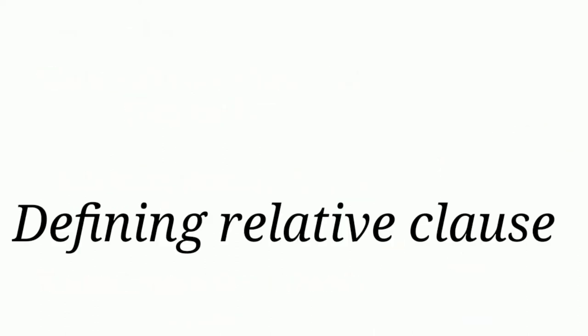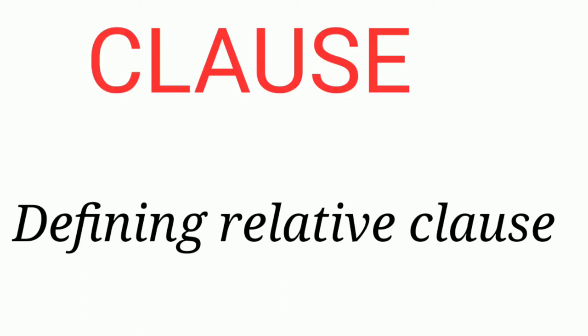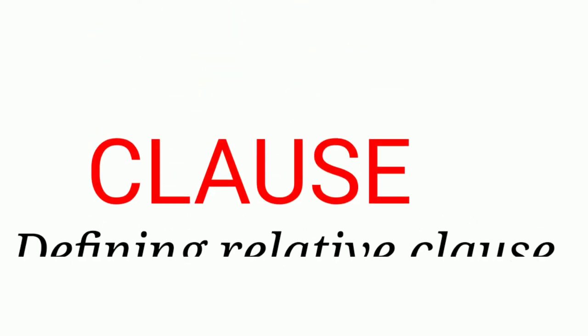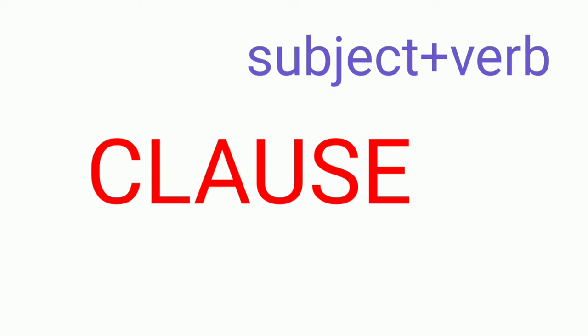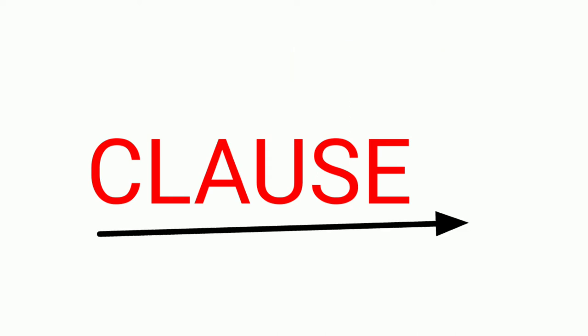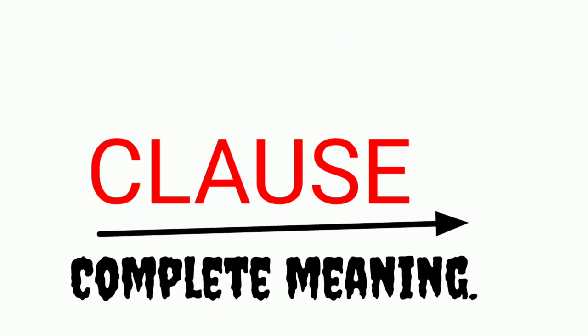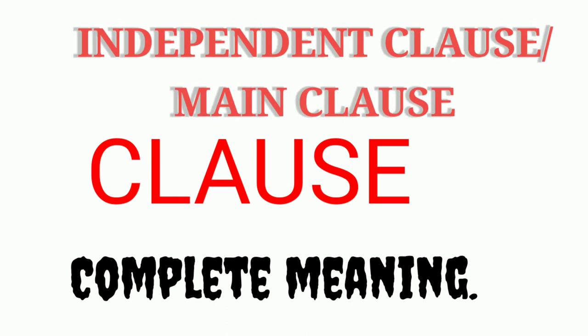Here we are learning about defining relative clause. Before learning about them, first of all, we have to know what is a clause. A clause is a group of words that contain a subject and a verb. A sentence gets a complete meaning with these words. Sometimes a clause can give a complete meaning on its own — it is called an independent clause.